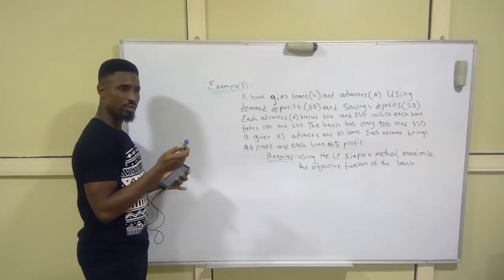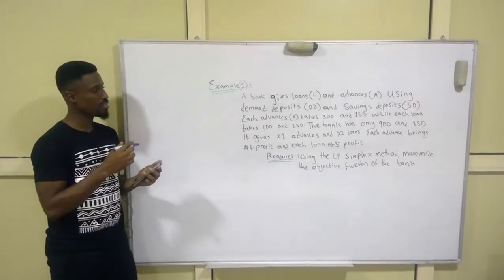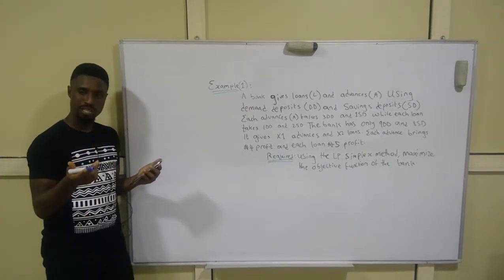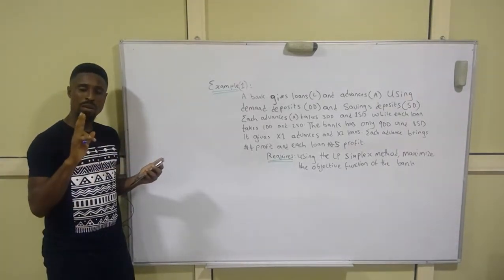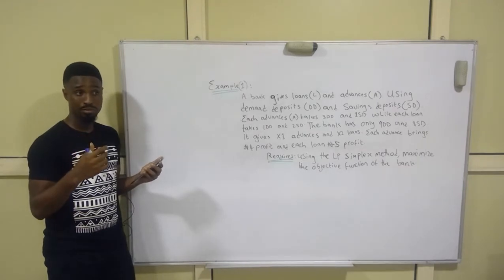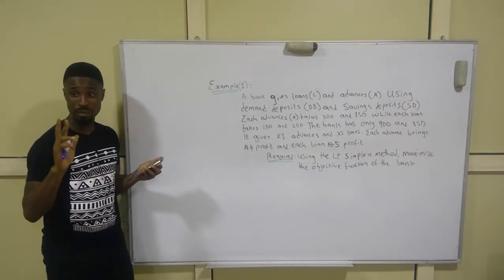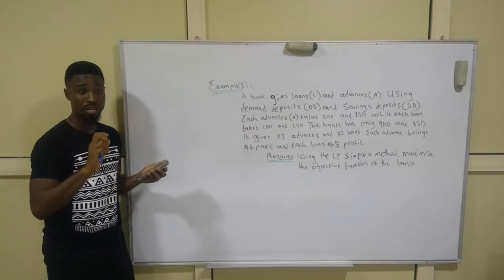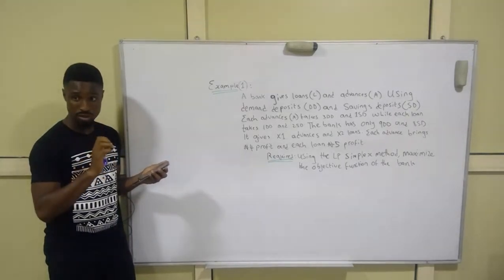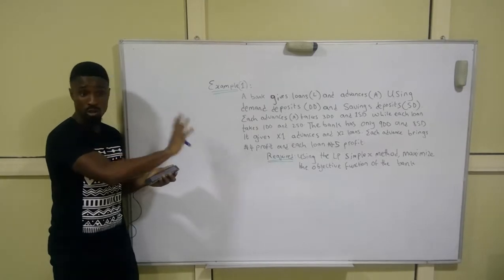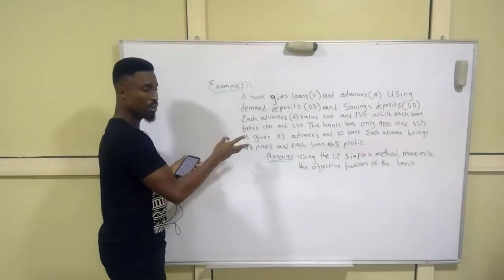For this illustration, two things that need to come to mind about linear programming are the maximization concept and the minimization concept. When talking about maximization, you're talking about maximizing profit, but minimization is about minimizing cost. For this question, we're only talking about maximization — how a company wants to maximize profit.